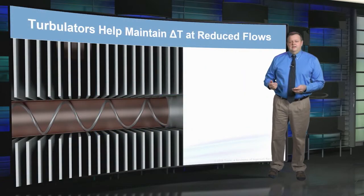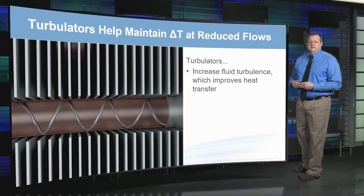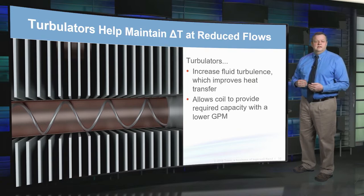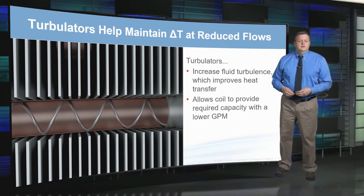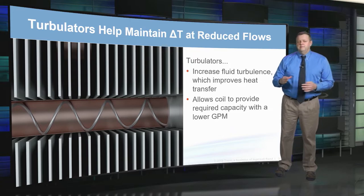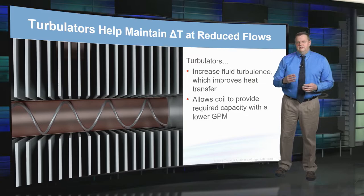Regardless of tube diameter, turbulators allow coils to maintain — and in most cases increase — the delta T at part load. So in selecting coils for higher delta T systems, turbulators are a great option. They increase fluid turbulence, which improves heat transfer, allowing the coil to provide required capacity at lower GPM, leading to reduced pumping energy at part load conditions. Trane has over 50 years of successful field experience with turbulators, with performance certified by AHRI. Now let's talk about water velocity — earlier I eliminated coils with water velocity at design conditions less than 2 feet per second.